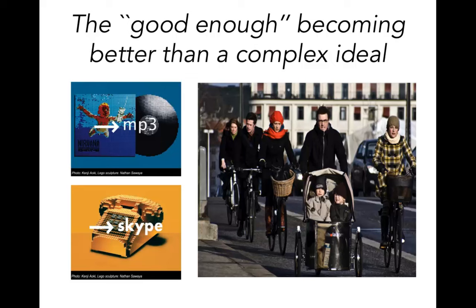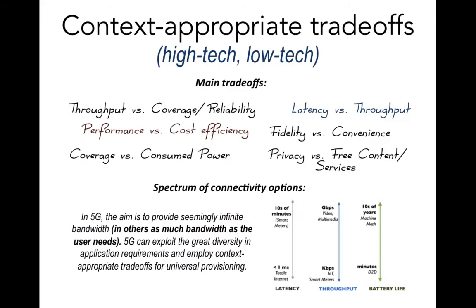We also see people increasingly using simpler technologies for sustainability reasons. For example, in many advanced countries people are taking recourse to riding bikes instead of cars — again an example of an approximate technology, choosing lower technology because of the benefits it offers. This brings us to the central idea of the paper: context-appropriate trade-offs.